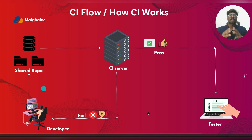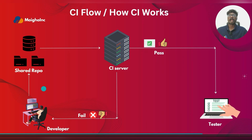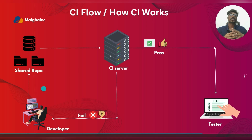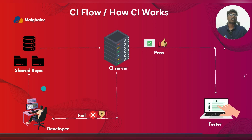Let's see how CI works with a real-world example. Suppose you're a developer working on a shopping app and you've finished a small change like fixing the 'add to cart' button. You push your code to the shared repository like GitHub. The CI server immediately detects this new code and automatically starts building and running tests. There are two possible outcomes: if the tests pass, everything is working fine and the code is passed on to the tester for further testing.